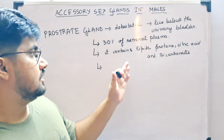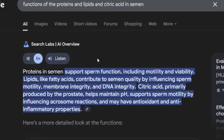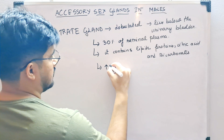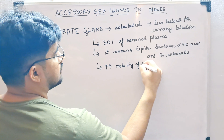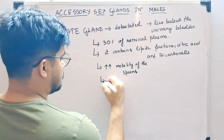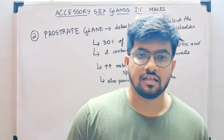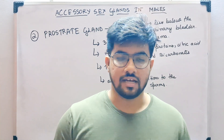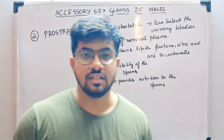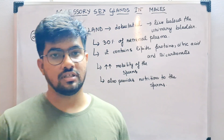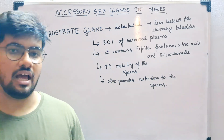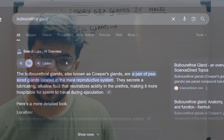The prostate secretion is also slightly alkaline. The bicarbonate plays a major role, and the lipids and proteins are useful for the sperm's nutrition and the overall composition. The prostate gland secretion helps to increase the mobility of the sperms and also provides nutrition to the sperms in the female tract.